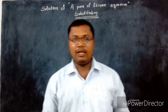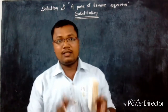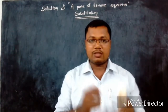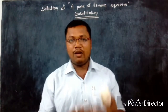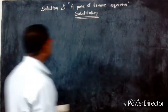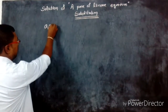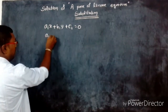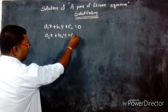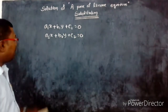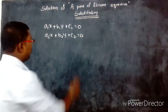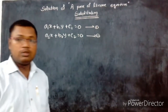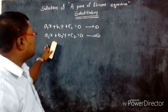Solution of a pair of linear equations through the substitution method. In this method, we have to find the value of one variable in terms of the other variable from equation 1, then substitute that value into equation 2. The linear equations are: a1x + b1y + c1 = 0 and a2x + b2y + c2 = 0. We have to solve these two linear equations using the substitution method.